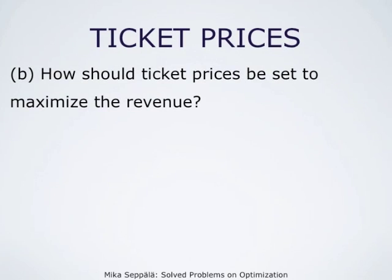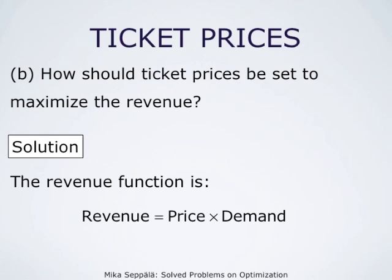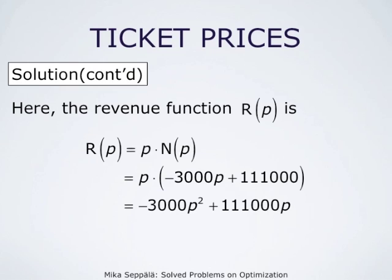The second part of this problem was to determine how the ticket prices should be set to maximize the revenue. The revenue — that is, the income we get from ticket sales — is price times the number of tickets sold. So revenue is price times demand, and we now have a formula for the demand function: N(P) = −3,000P + 111,000.